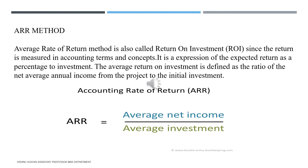The average rate of return of that project: average net income means the total of six consecutive years divided by six — that is six lakh divided by six, which gives one lakh. Average investment is initial investment divided by two — five lakh divided by two equals 2.5 lakh. So ARR is one lakh divided by 2.5 lakh. That is the average rate of return.